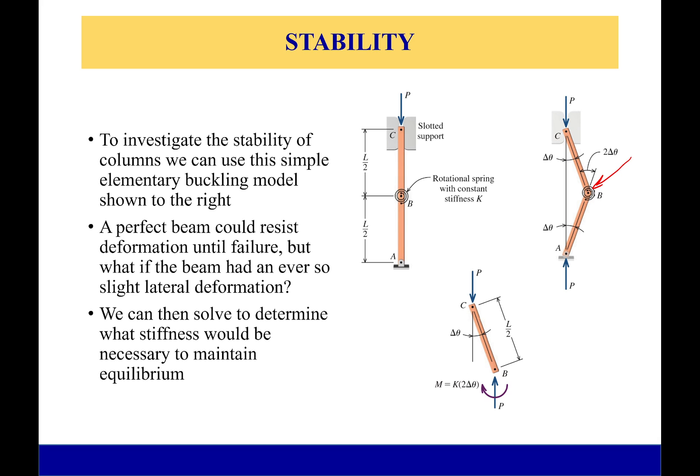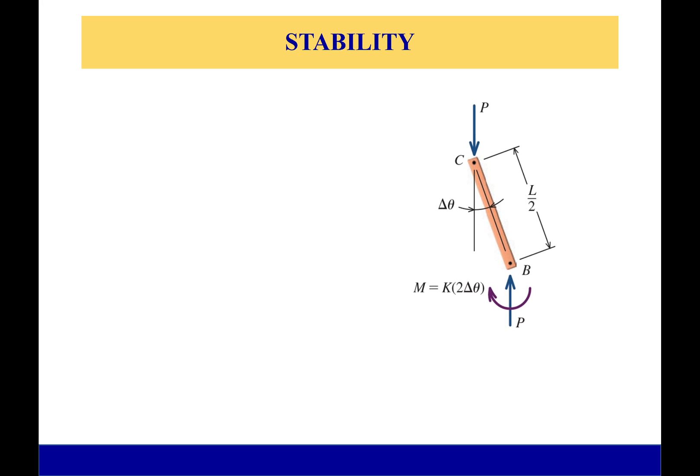If we have this spring stiffness of k and I look at the angle delta theta, I can say that my moment that I'm having to resist is going to be equal to the spring stiffness times twice the change in angle from the horizontal. This is the moment that's just caused by my spring.